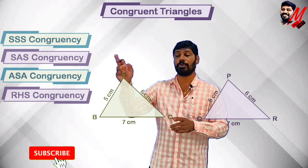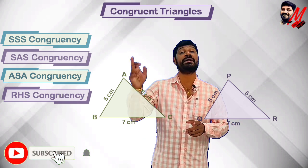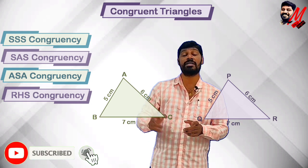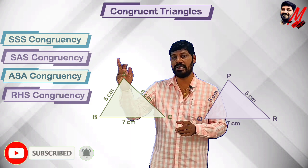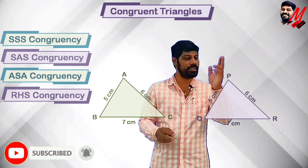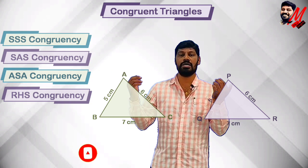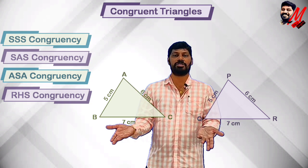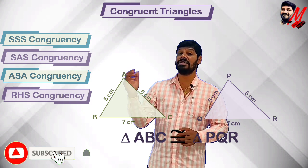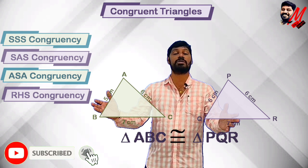So here we have to maintain proper order in the alphabet — A, B, C and P, Q, R — when writing congruence statements. It is important to mention the vertices in the correct corresponding order.